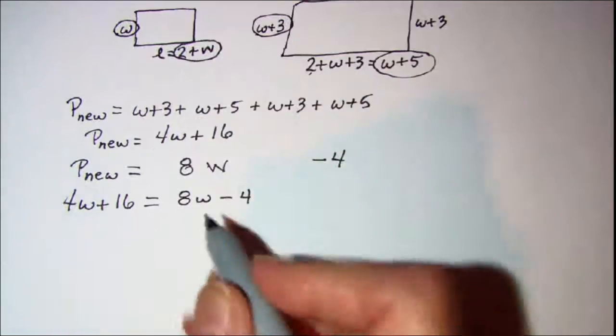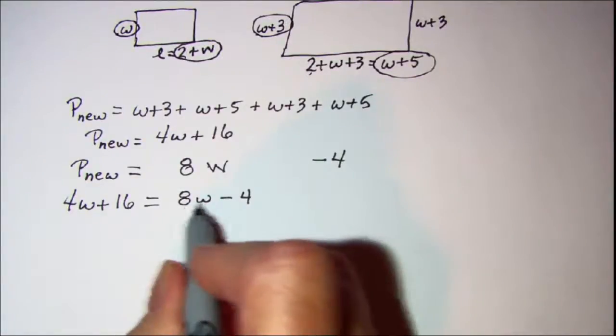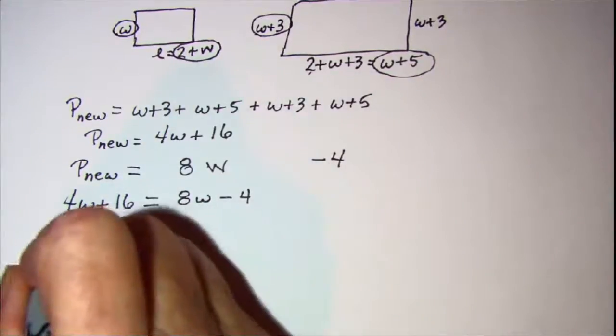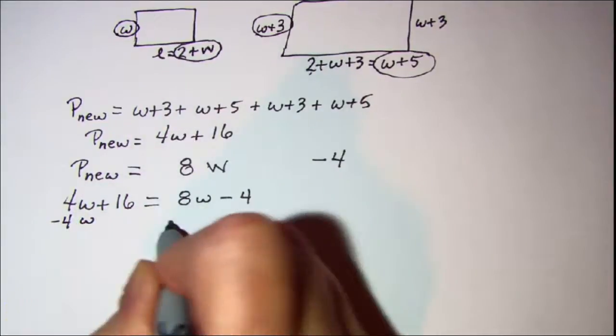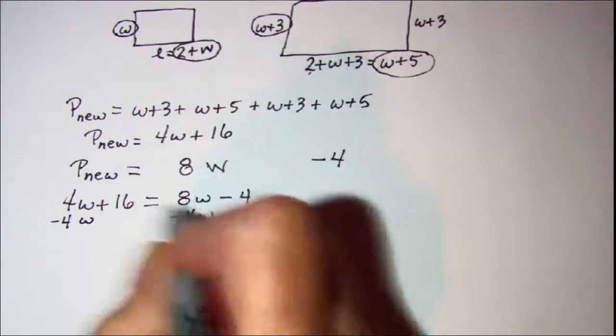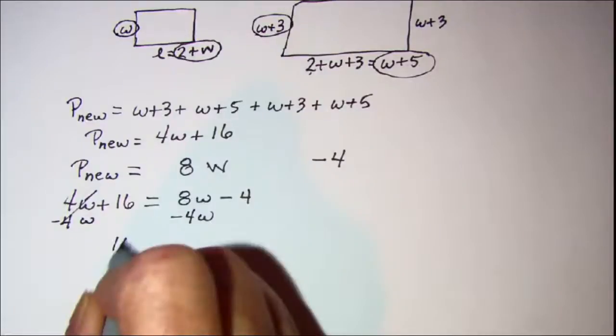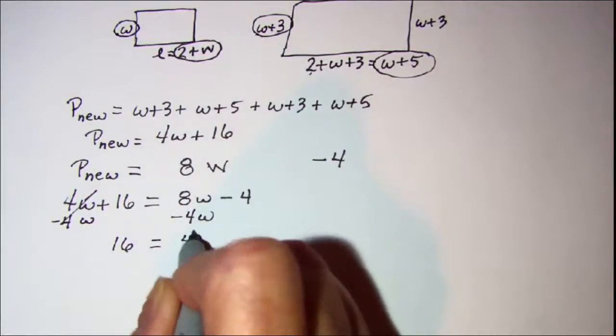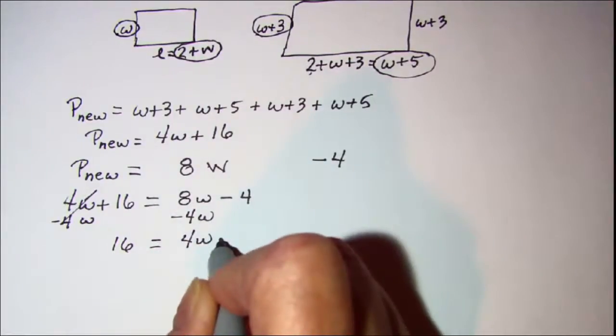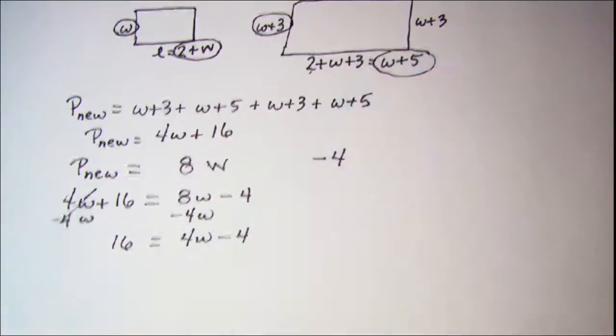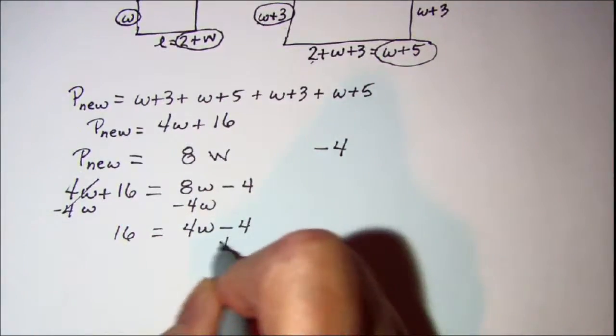Now let's solve. I have the bigger 8W on the right side, so I'm going to subtract 4W from both sides. Cancel, and I have 4W on the right side now. Minus 4, and then add 4 to both sides.